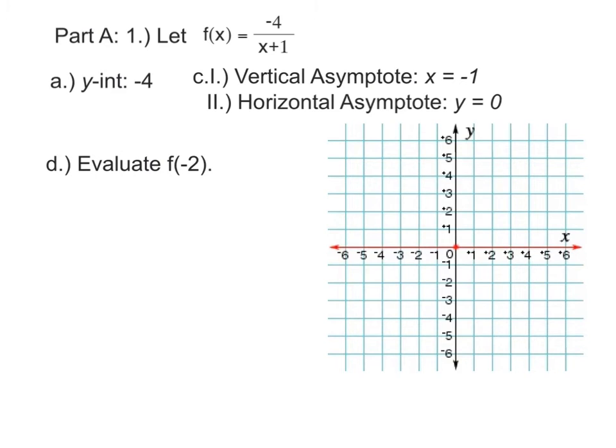The last part that I'll have you do before you get to the graphing is to evaluate a specific point. Here I just tell you to find f(-2). Take -2 and plug it in. We'll have -4/(-2+1). -2+1 is -1. 4 divided by -1 is 4.